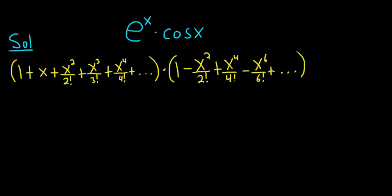Now we just have to very carefully figure out the first four non-zero terms. When you are multiplying this out, you have to pick one term and only one term from each parentheses. For example, let's start by looking for all of the constant terms. We can pick the 1 on the left, and the only term we can pick on the right to give us a constant term is the 1. So 1 times 1 is 1. There's no other way to get a constant term.